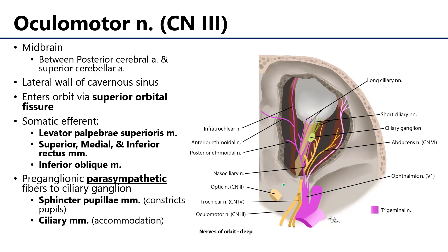The next nerve is the oculomotor nerve, or cranial nerve 3. The oculomotor nerve originates in the midbrain and it picks a course that runs in between the posterior cerebral artery and the superior cerebellar artery.